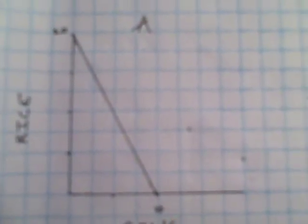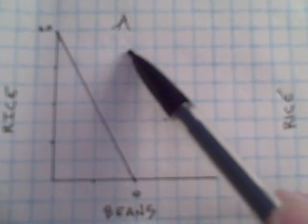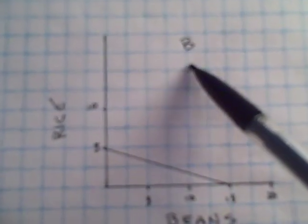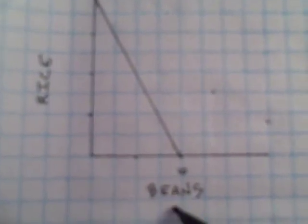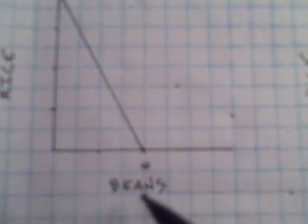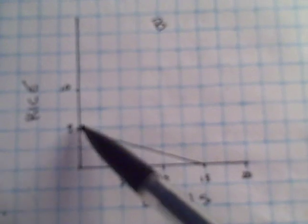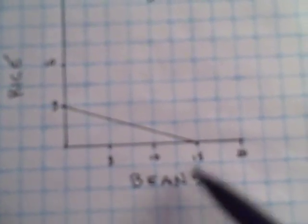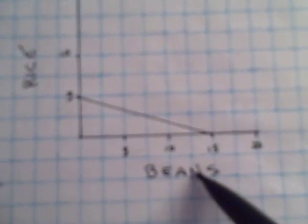Suppose that there's only two countries in the world, country A and country B, and there's only two goods that can be produced, rice and beans. When A specializes in the production of rice, it can make 20 bushels, and when it specializes in the production of beans, it can make 10. And country B can make 5 of rice when it specializes and 15 of beans.